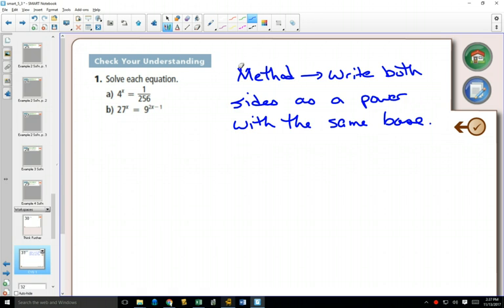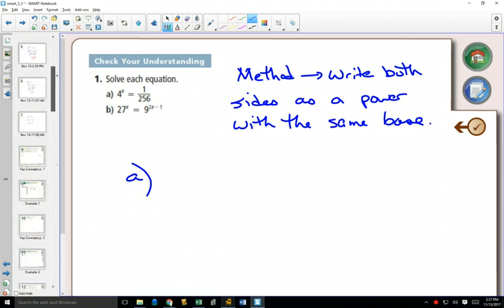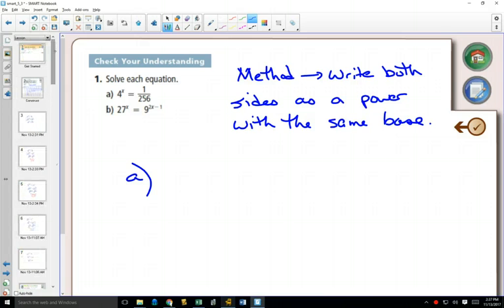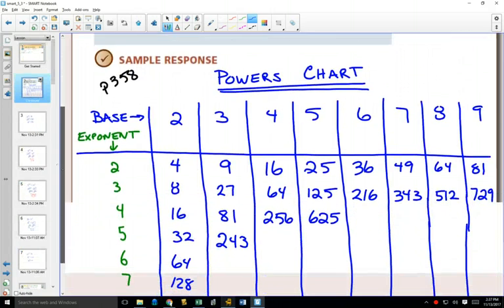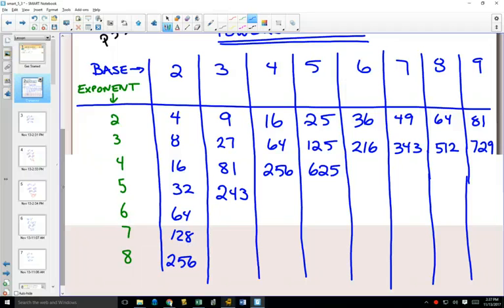So doing that, looking at this first one in A, we've got 4 to the x equals 1 over 256. So we're going to check our 4 and 256 in the same column on our powers chart. So I'll go back to our powers chart here from before.